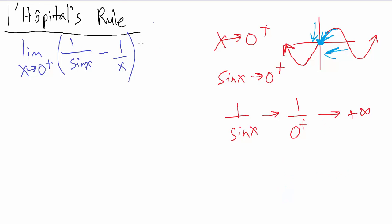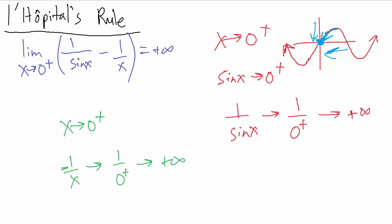So far we have this equals positive infinity. Then what happens with the minus one over x? As x goes to zero from the positive side, one over x goes to one over zero from the positive side, which goes to positive infinity. But we have minus one over x, so minus one over x goes to minus positive infinity — in other words, just minus infinity. So this part gives us minus infinity.